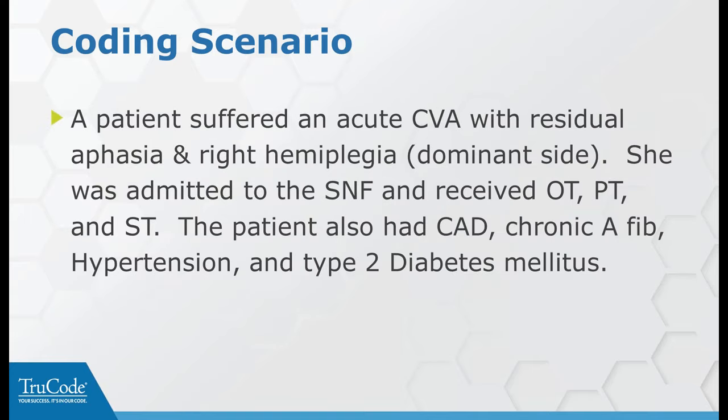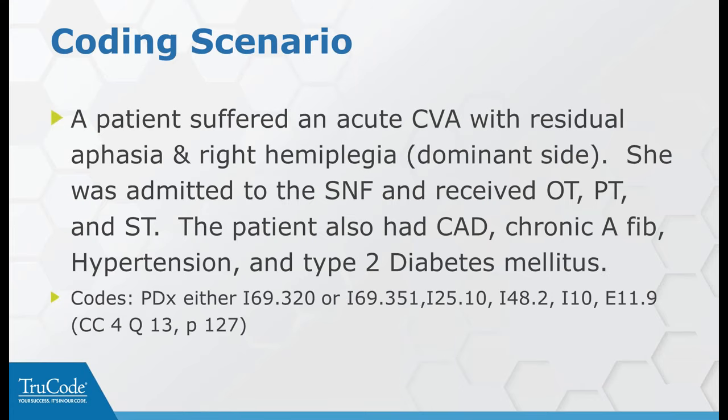Another scenario: a patient with acute CVA with residual aphasia and right hemiplegia on the dominant side, admitted to the skilled nursing facility for OT, PT, and ST, with various chronic conditions. The principal diagnosis is the I-69 combination code. Since there are two residuals - aphasia and right hemiplegia - either one could be listed as the principal diagnosis. Additional codes: I-48.2 for chronic atrial fibrillation, I-10 for hypertension, and E-11.9 for type 2 diabetes.